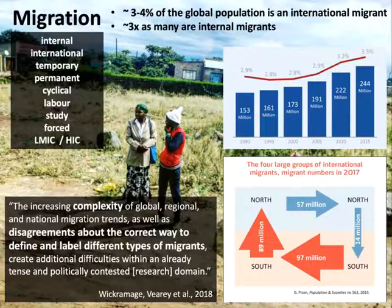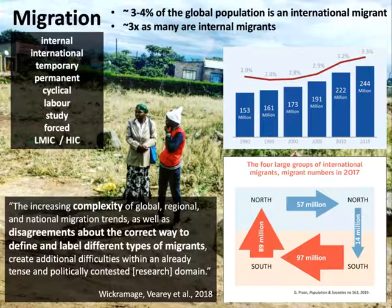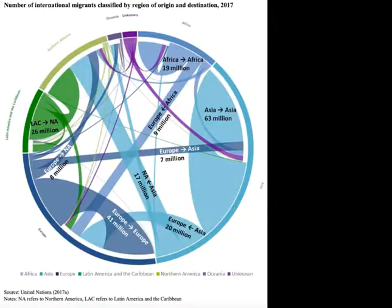We need to be aware of the increasing complexity of movements and the continuing debates around labelling and categorising. We need to think about what this means for the ways we do research, the ways we apply our research, and the ways we respond and act in different spaces — whether as service providers, bureaucrats, or policy makers. This slide further illustrates the point about the kinds of movement that are taking place.